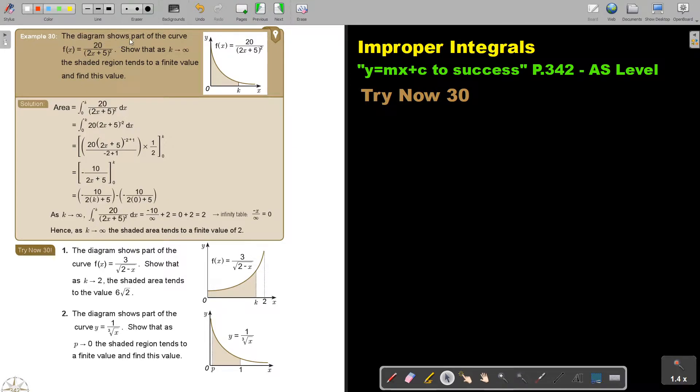The diagram shows part of the curve. Here's the function. Show that as K strives to infinity, the shaded region tends to a finite value and find that value.